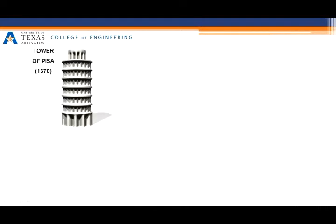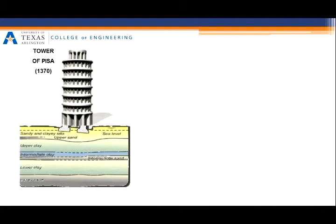Several classic examples of geotechnical failure, such as the Leaning Tower of Pisa, could have been averted if the subsurface was better understood.